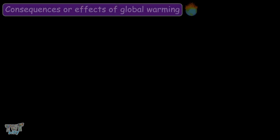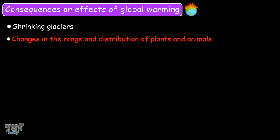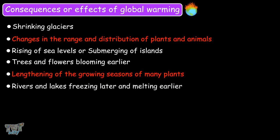Now let's learn some consequences or effects of global warming: shrinking of glaciers, changes in the range of distribution of plants and animals, rising of sea levels or submerging of islands, trees and flowers blooming earlier, lengthening of the growing seasons of many plants,